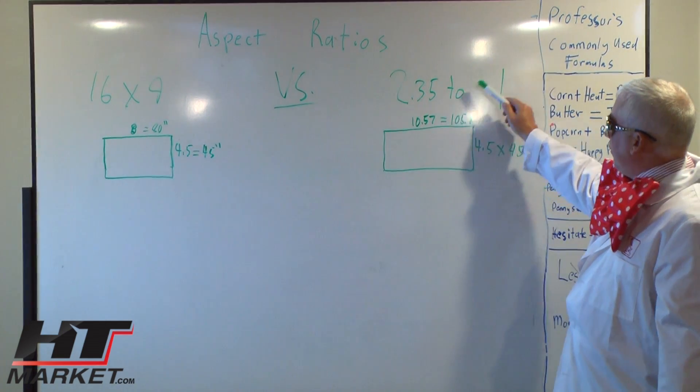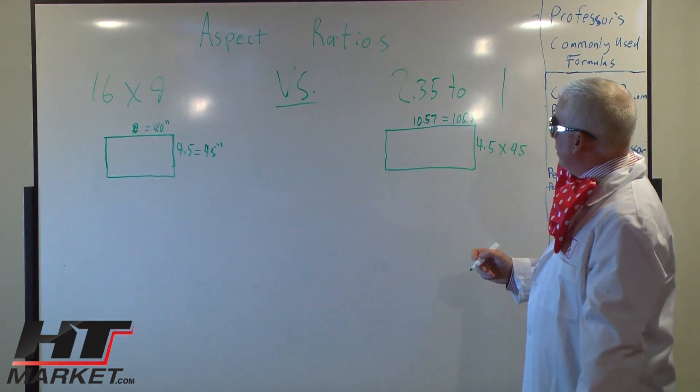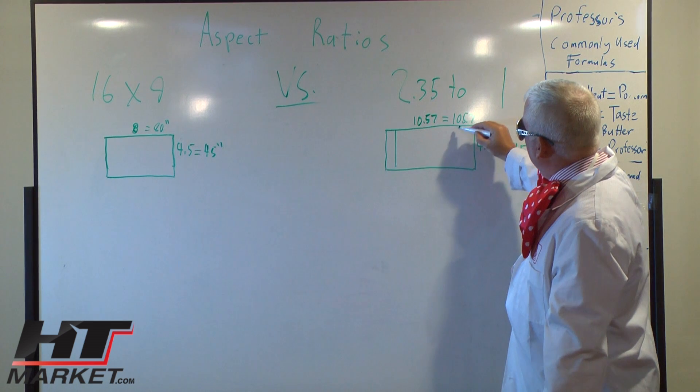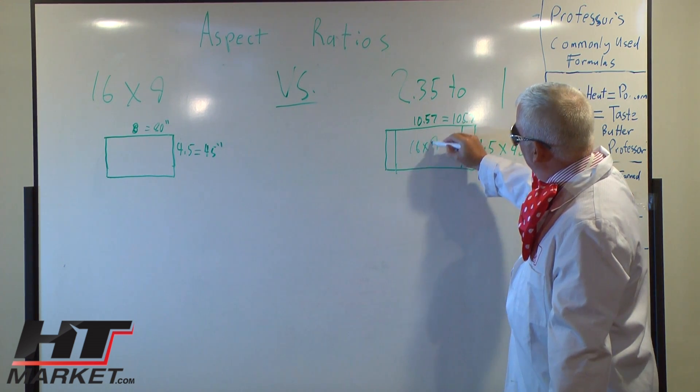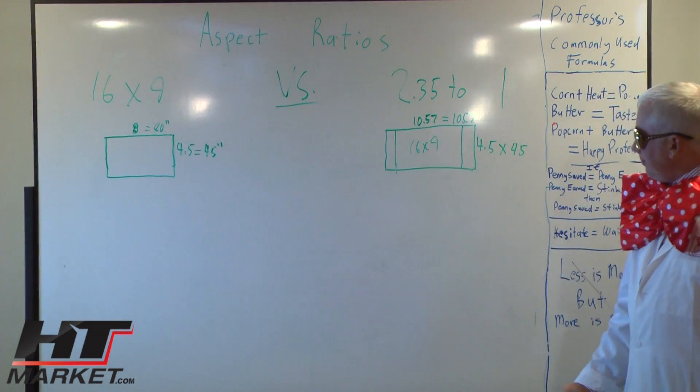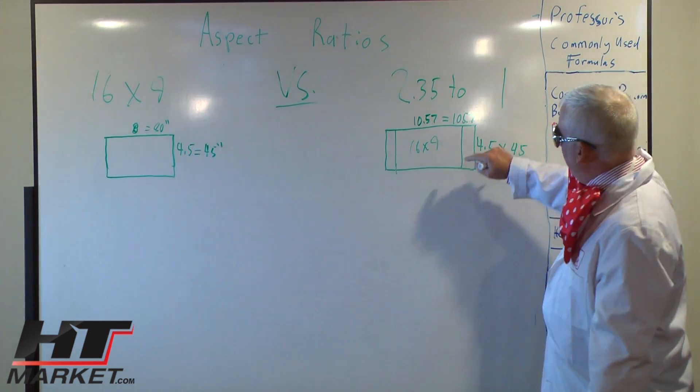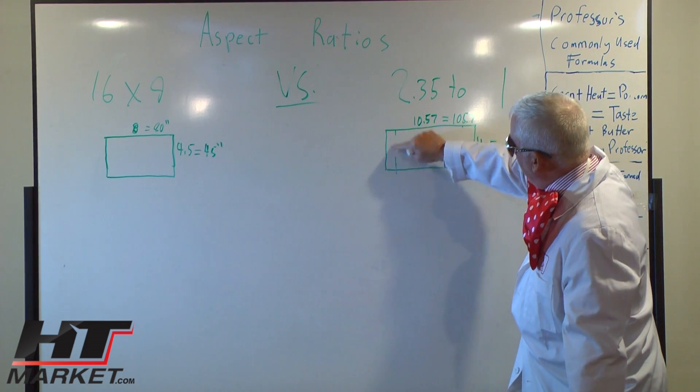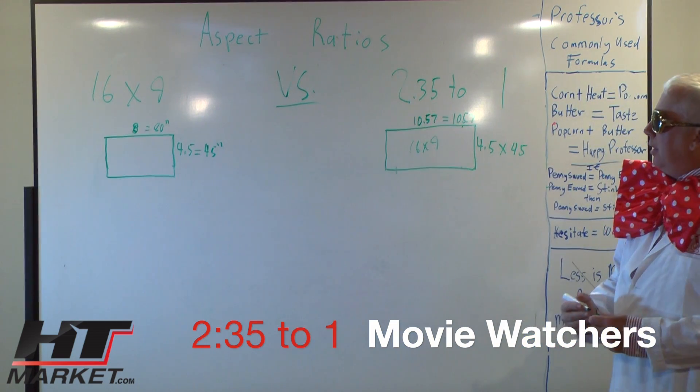Now if you bought a 2.35 to 1 screen and you switch to 16 by 9, you basically make the width a little less. So there's your 16 by 9 on your 2.35 to 1 screen. It's a little less width, but when you go to 2.35 to 1, the black bars on the sides go away and it fills the picture. So you have a constant height on the screen.